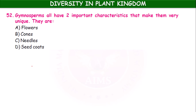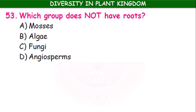Gymnosperms all have two important characteristics that make them very unique. What are they? The options are flowers, cones, needles, and seed coats. The answer is cones and needles — these are the defining features. Which group does not have true roots? Select mosses, algae, and fungi — they have no true roots.